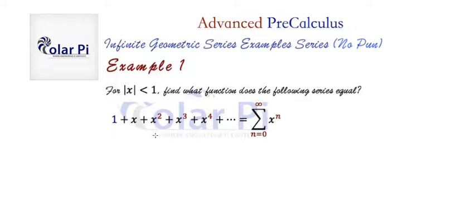Okay, so what is the series equal to? Now if you're paying attention, this is an infinite geometric series because each time we're just multiplying by x. So r is x and clearly the first term a is one.